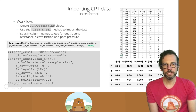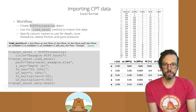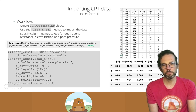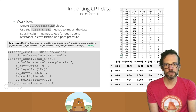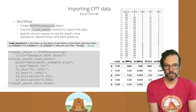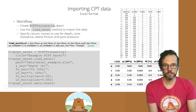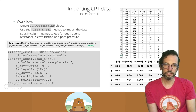When we import CPT data we first need to create one of these PCPT processing objects and then use a load method. There are several load methods, of which the simplest one to explain is the load Excel method. That method simply takes an Excel file as the argument and then converts the Excel data into data for the PCPT processing object.